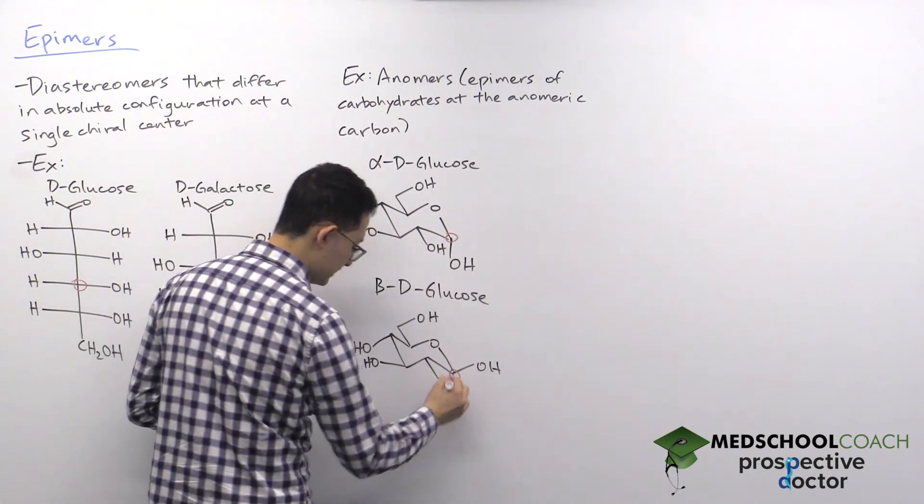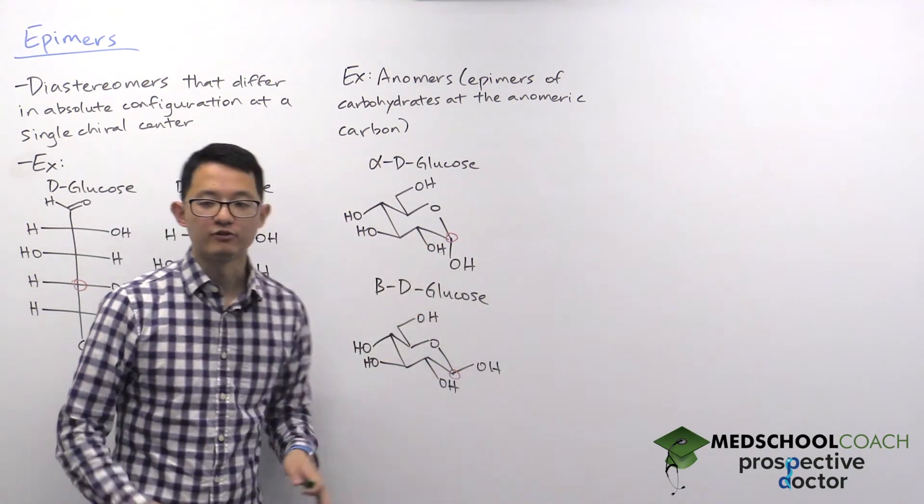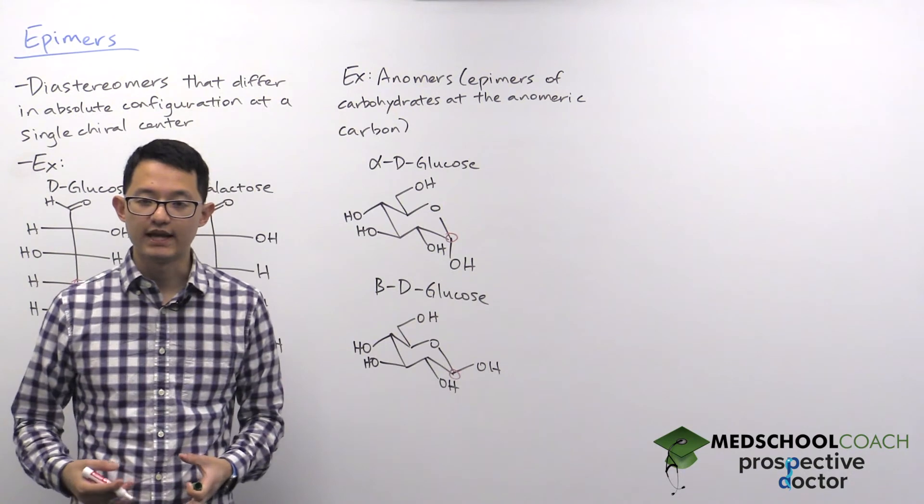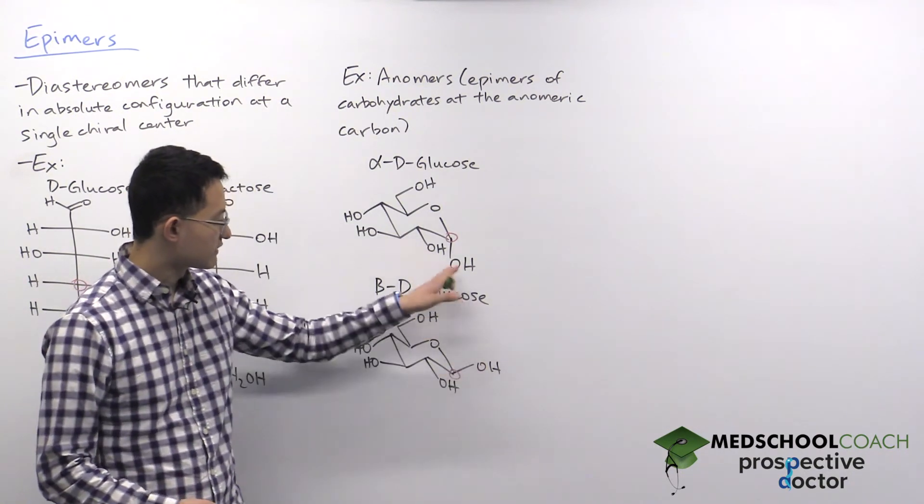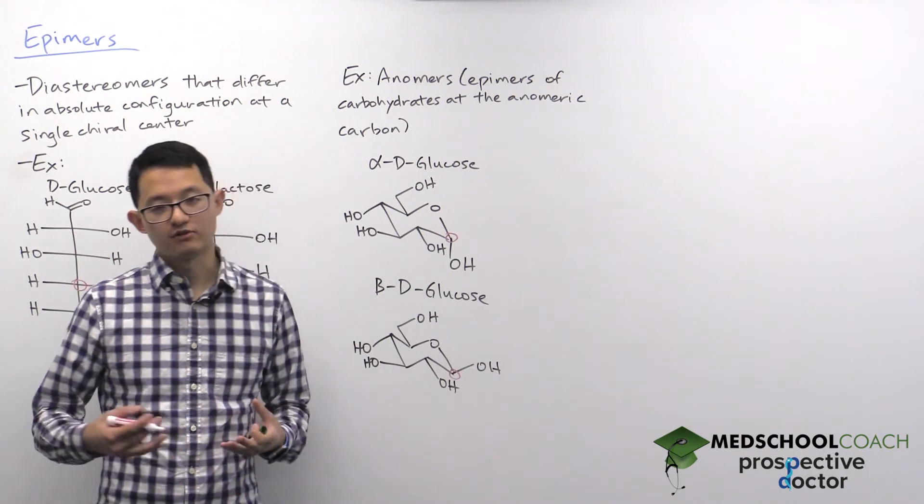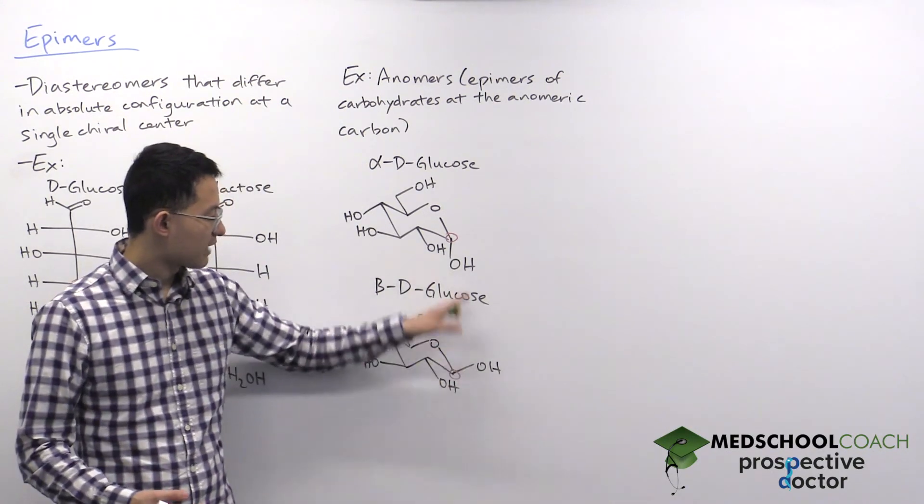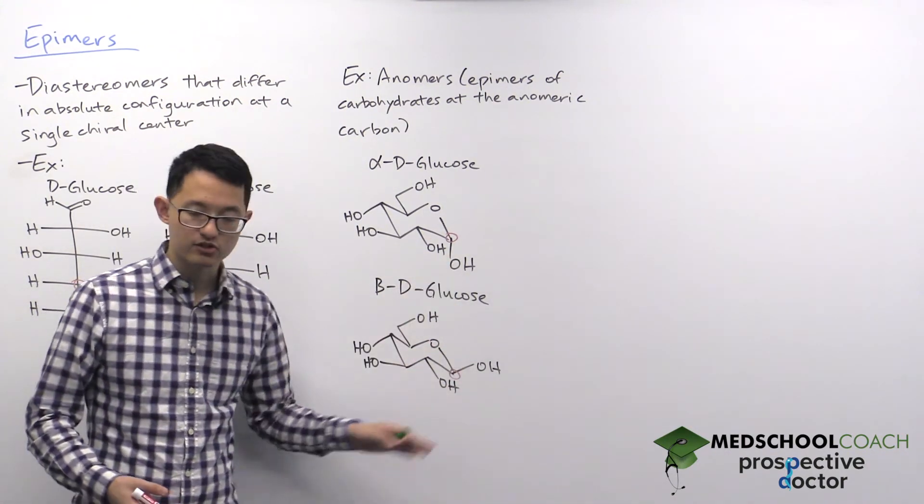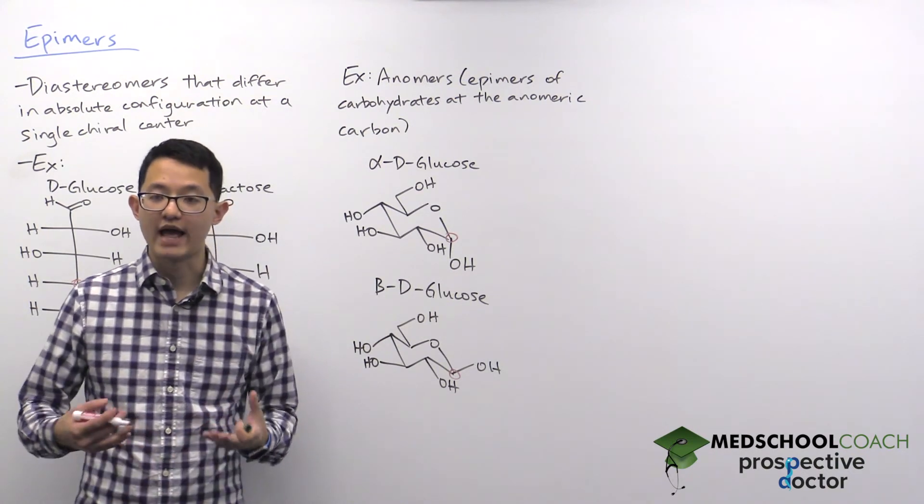This atom that I've circled is the anomeric carbon, and you can see that the positions of the hydroxyl groups are different in the two. So that essentially says that they have different absolute configurations at these two chiral centers, so they are epimers.